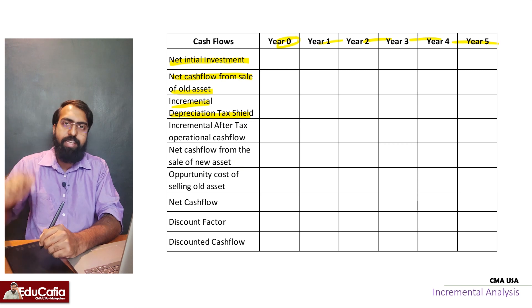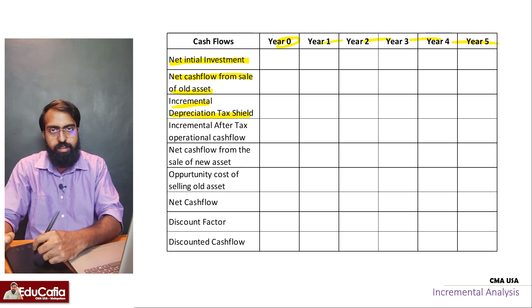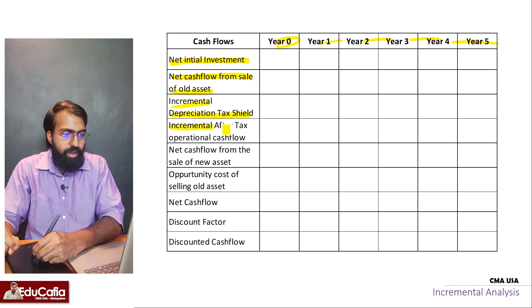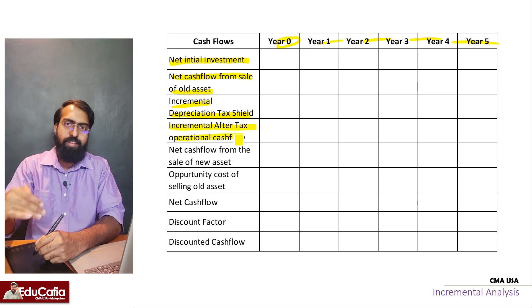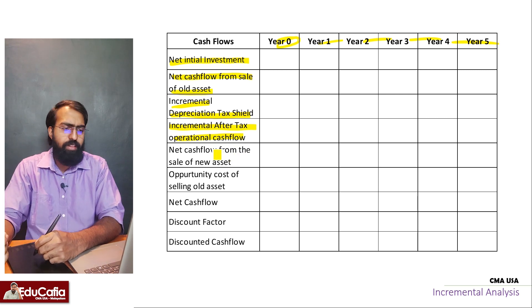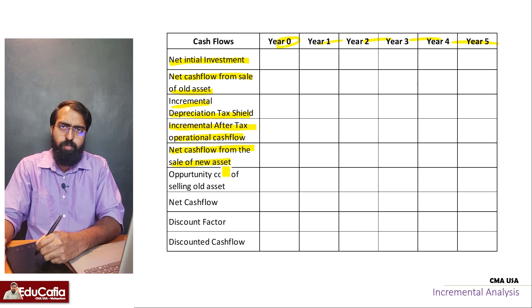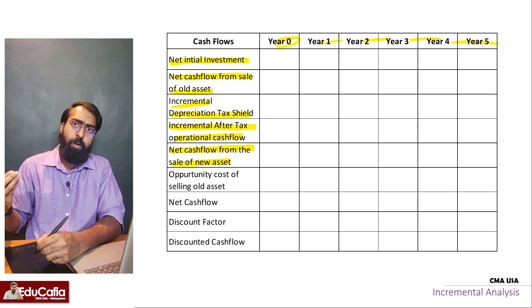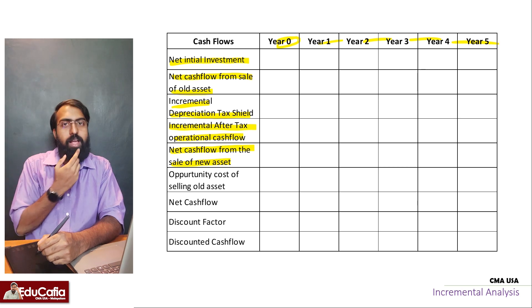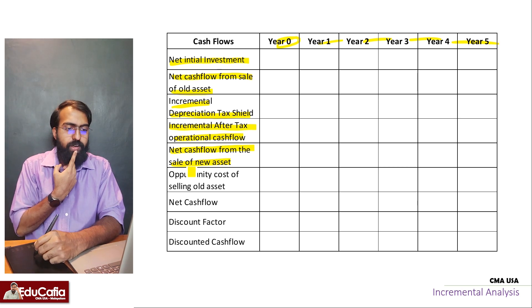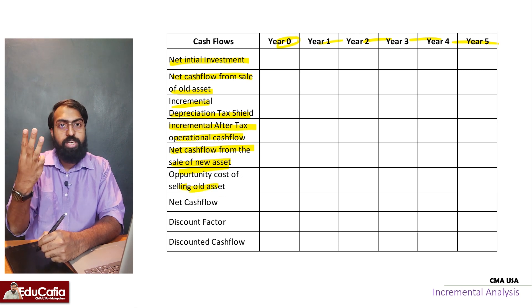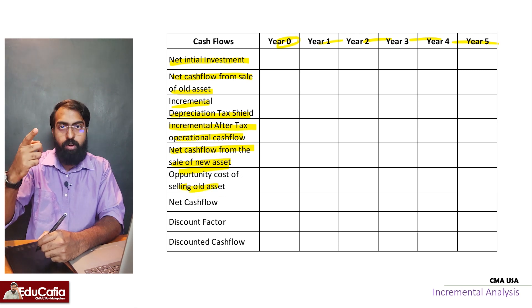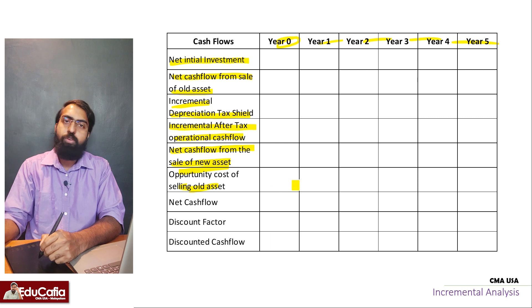There is an incremental analysis. We need to check that in this machine: incremental after-tax operational cash flow - if there is extra operational cash flow. The net cash flow from the sale of new asset. If you don't have it in the new machine, it's going to be disposed. Opportunity cost of selling old asset - if you don't buy the new machine, the old machine is worth $500. That's the opportunity cost.